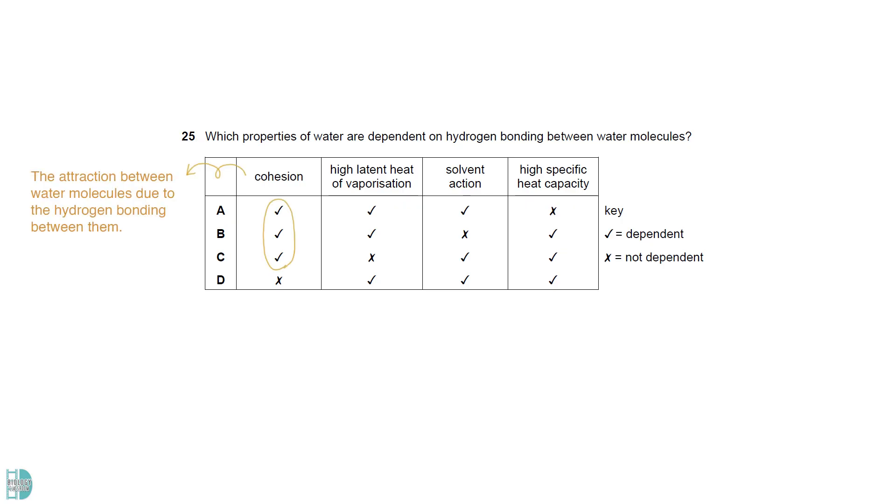Cohesion is the attraction between water molecules due to the hydrogen bonding between them. Both the high latent heat of vaporization and the high specific heat capacity of water are also due to hydrogen bonds. As a large quantity of heat energy is needed to overcome the bonds for water to evaporate and change its temperature by 1 degree Celsius.